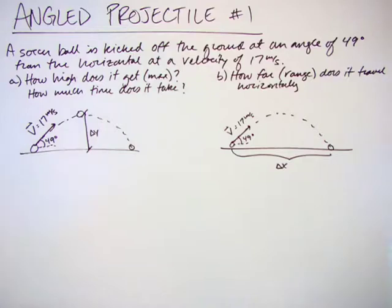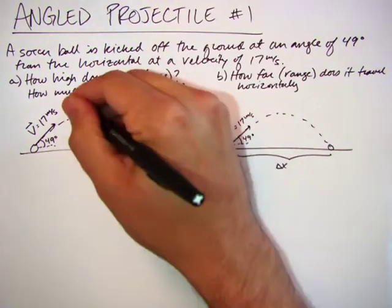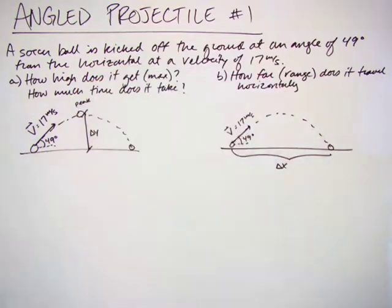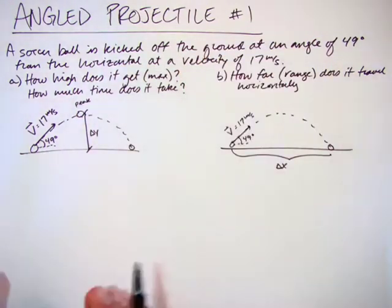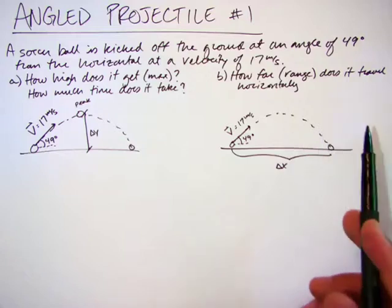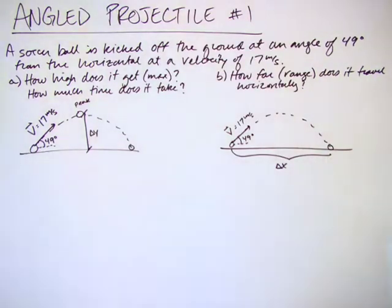We have a soccer ball kicked off the ground at an angle of 49 degrees from the horizontal at a velocity of 17 meters per second. Part A, how high does it get so its maximum height, delta y at its peak, and how much time does it take to get there? And then in B, I want to know how far does it travel horizontally, and that is the range. If you're going to launch it, how far does it actually travel side to side?